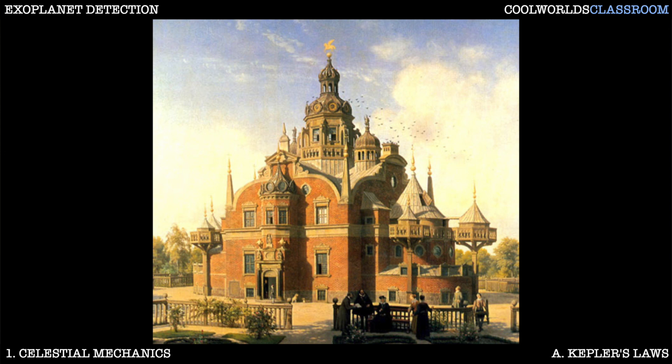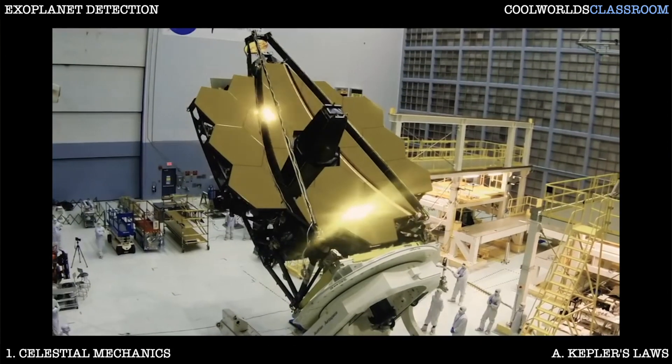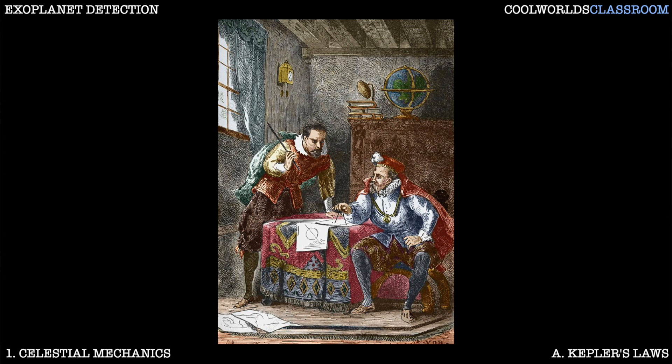Tycho resided in a grand observatory called Uraniborg, dubbed the Castle of Heaven. The modern cost of this Danish research institute would be about five billion dollars, not far off the cost of the James Webb Space Telescope. Tycho was able to catalogue the positions of nearly a thousand stars down to arc-minute precision, some ten times better than his peers. Although he closely guarded his catalogue, he gradually let Kepler access this precise dataset, which would prove crucial to unlocking the secrets of the planets.